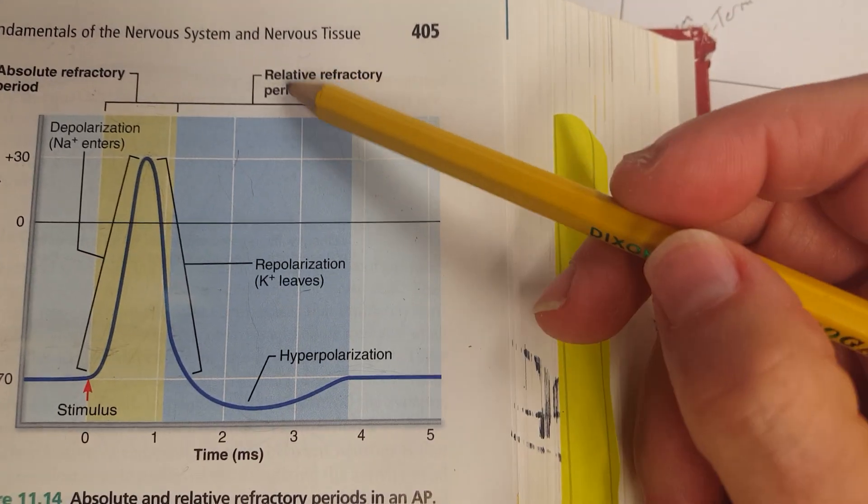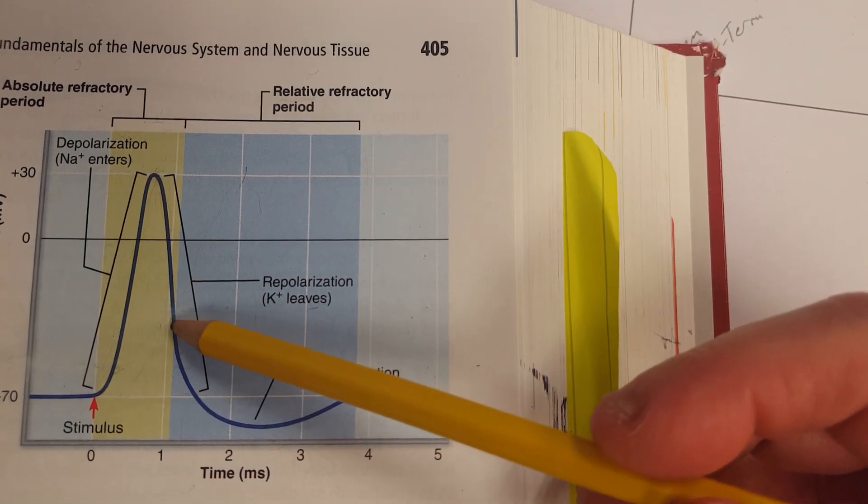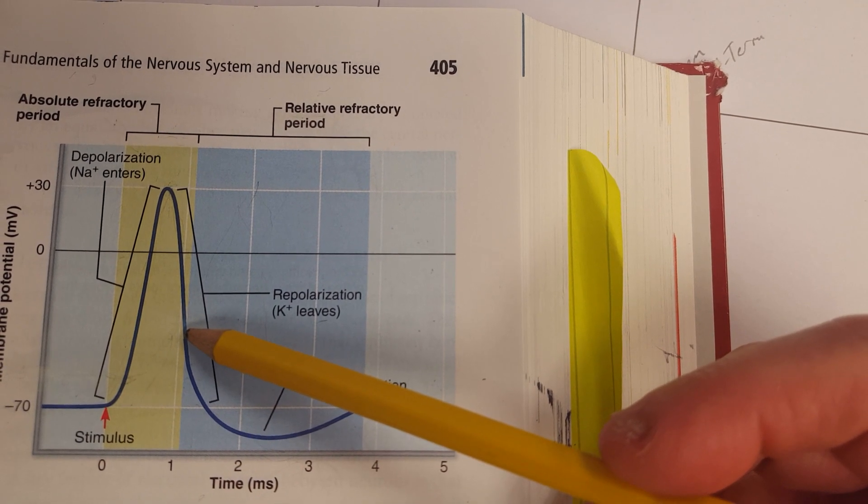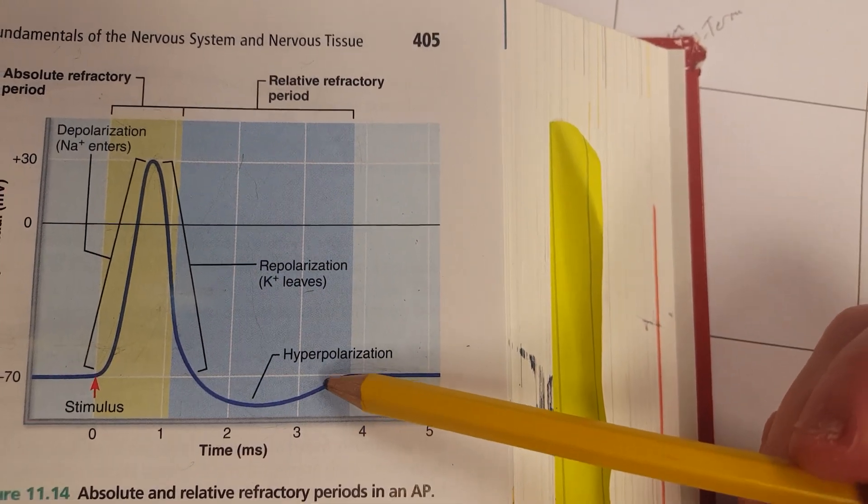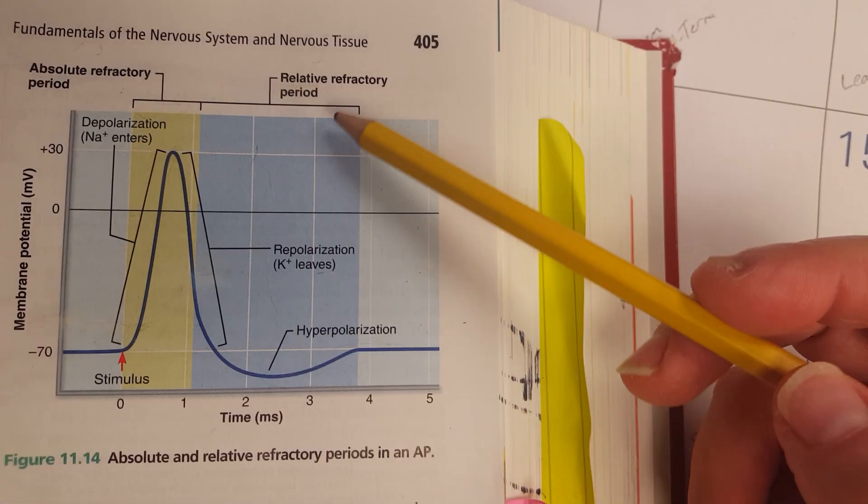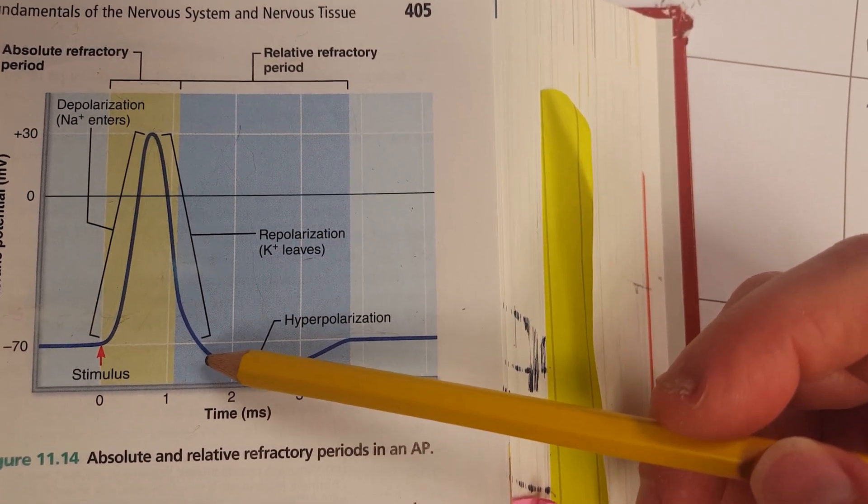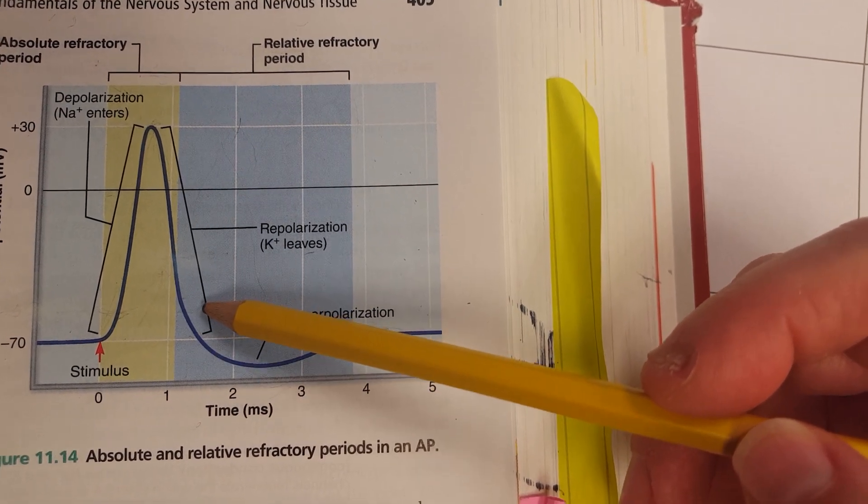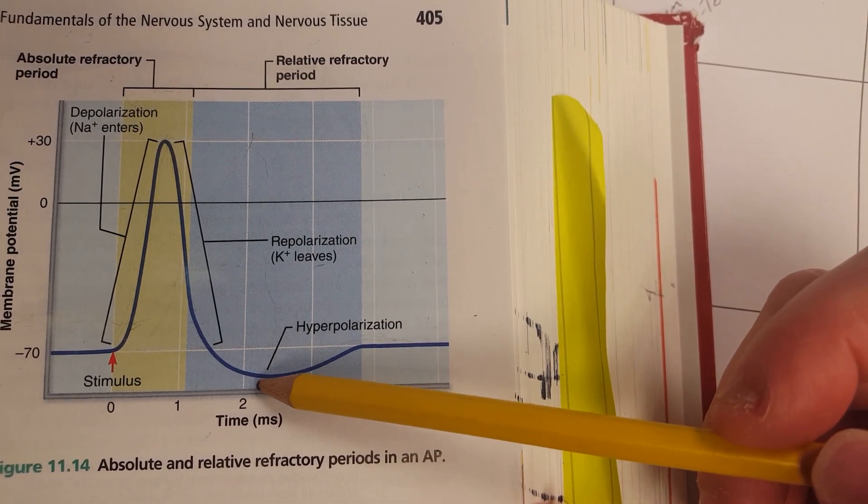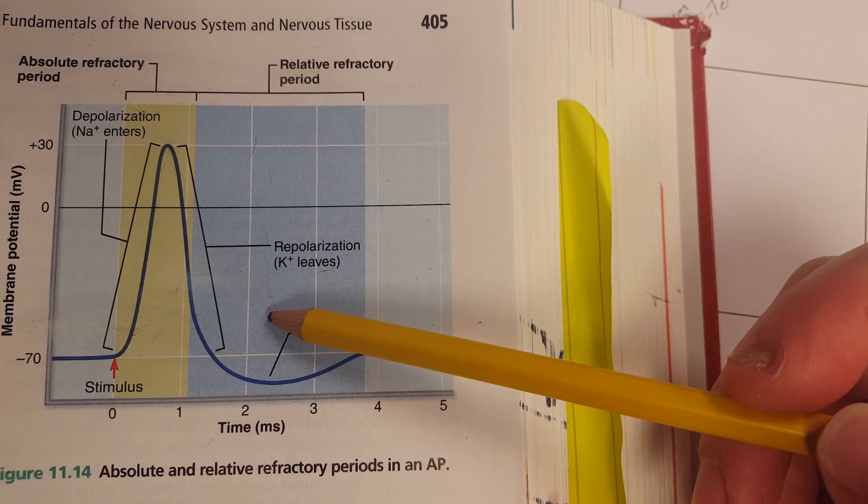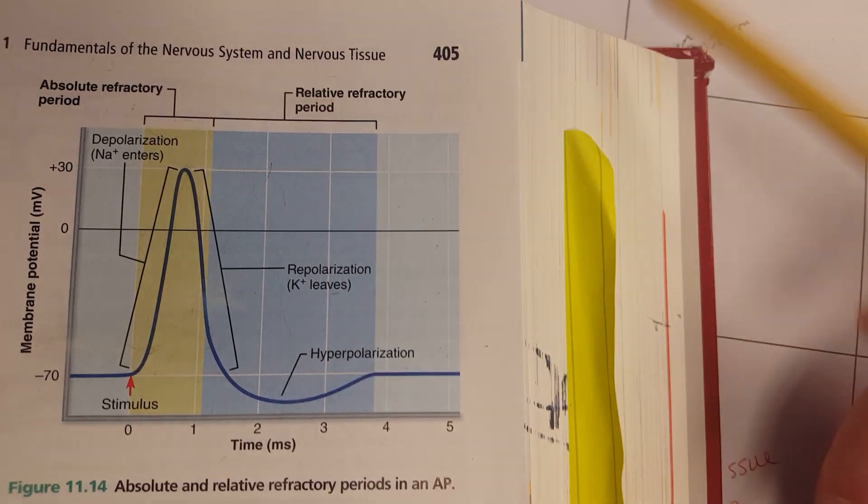So as we look at the relative refractory period, it is possible that we can have another action potential as long as we have supra-threshold stimulus. We have to have stimulus that is stronger than normal for the relative refractory period for most of it. Once we hit negative 70, we just need to go back to negative 55. If we go beyond negative 70, we have to have enough stimulus to get us to that negative 55.